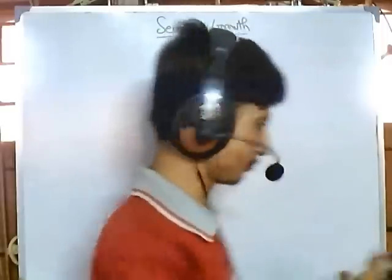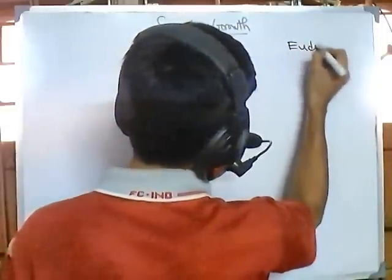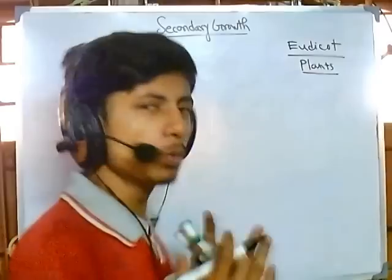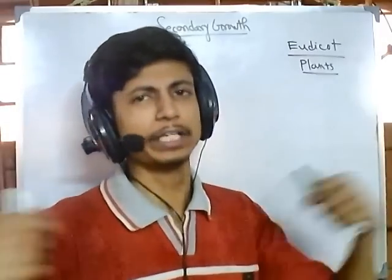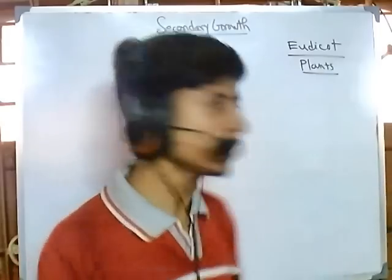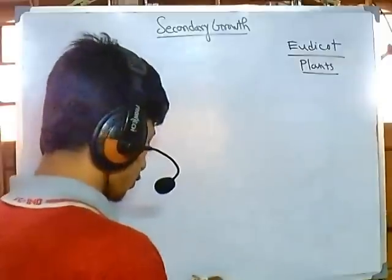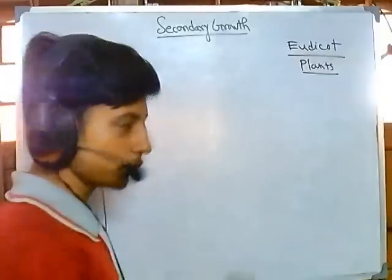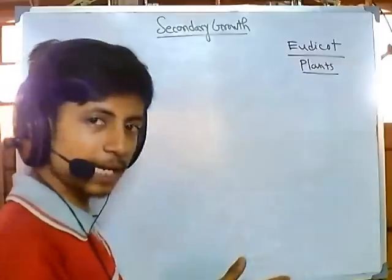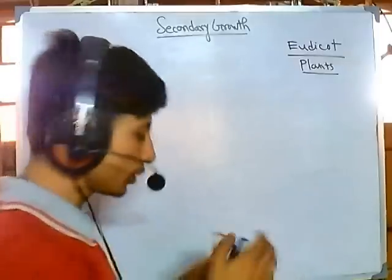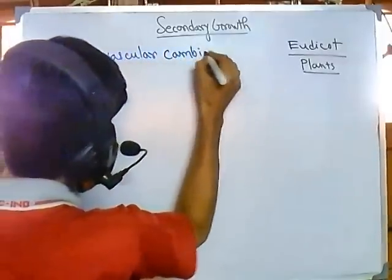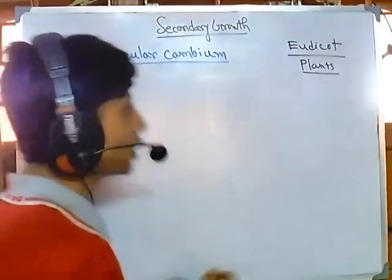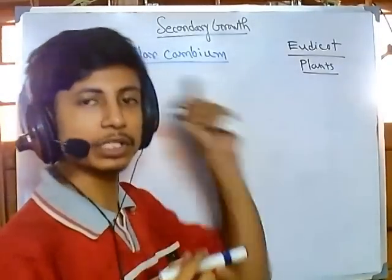Secondary growth is seen in dicot plants. If we take dicot plants as an example — typical woody plants which we call trees — a tree is a very large, long plant with a very broad girth. For those types of plants, secondary growth occurs due to the presence of a tissue present in between the xylem and phloem layer, and that tissue is termed vascular cambium.